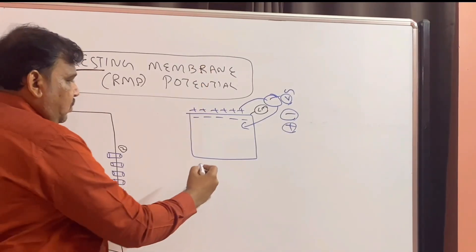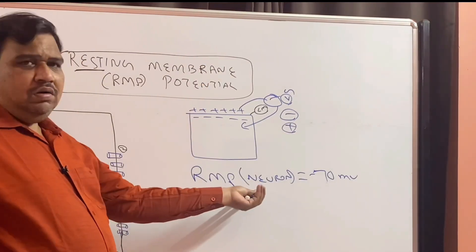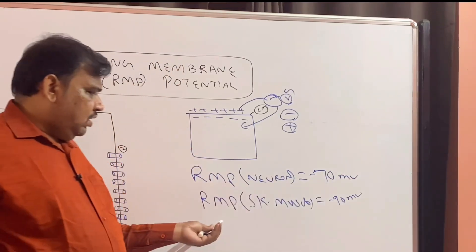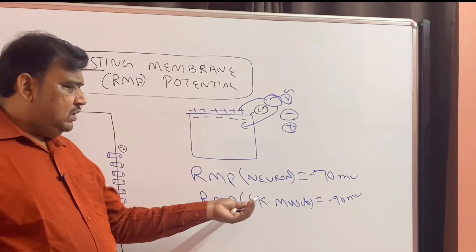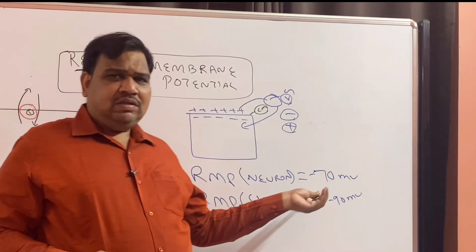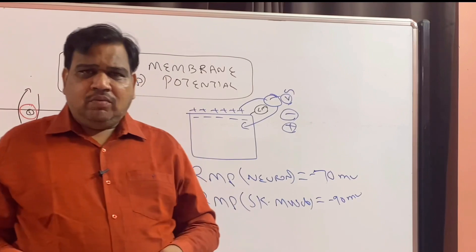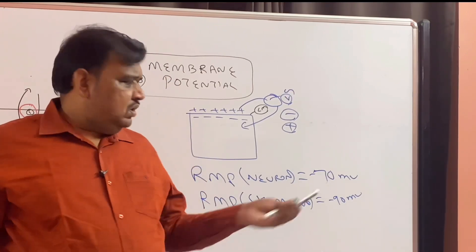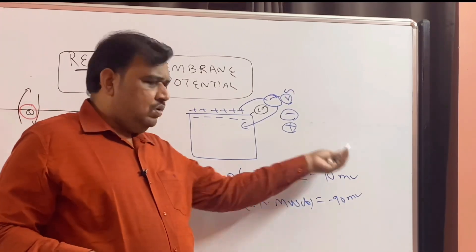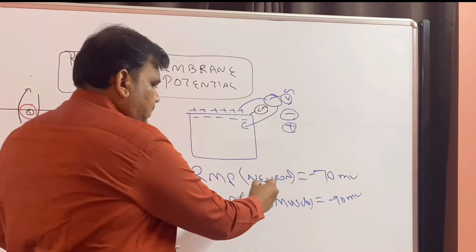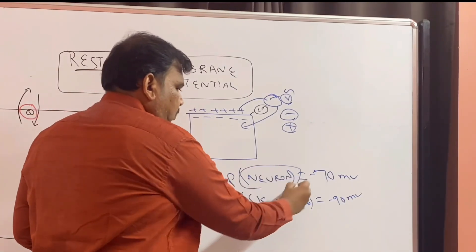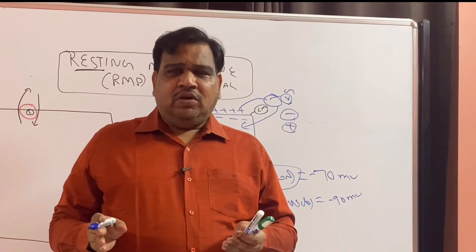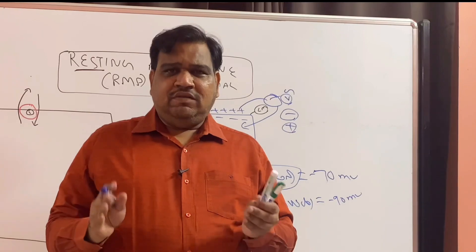First I will tell you the values. RMP of a neuron is usually said to be minus 70 millivolt. RMP of skeletal muscle is minus 90 millivolt. Today's video I am going to discuss about the genesis of resting membrane potential — how I am going to get that minus. I will take the example of a neuron: how I am going to get the resting membrane potential of minus 70 millivolt.